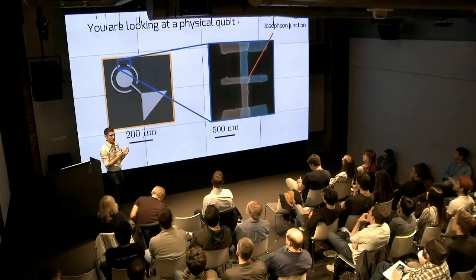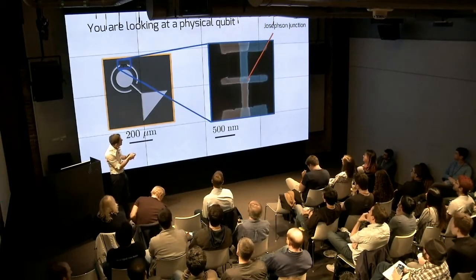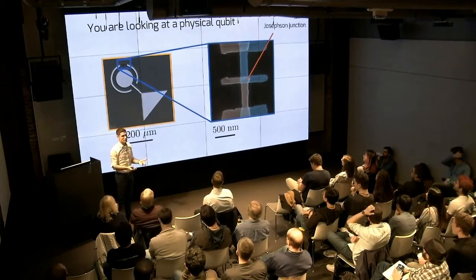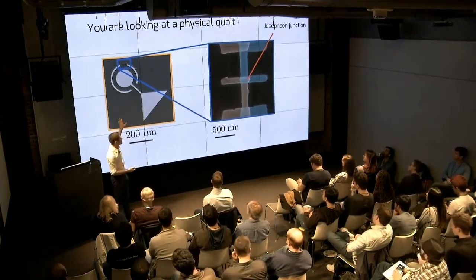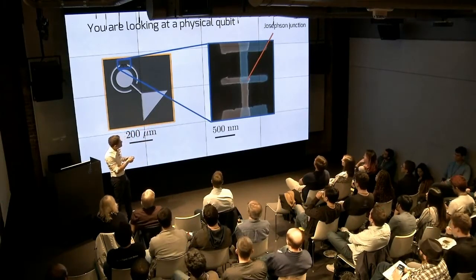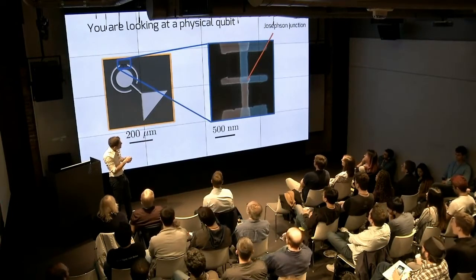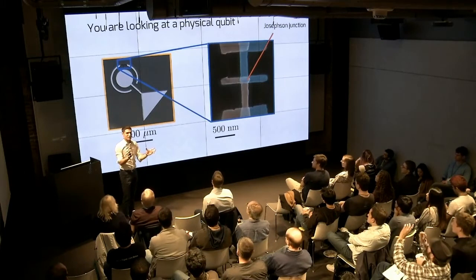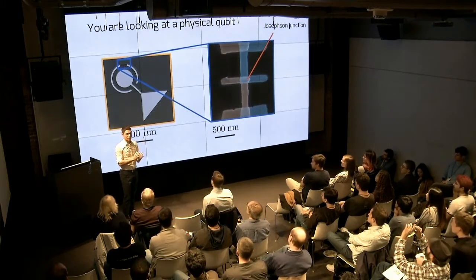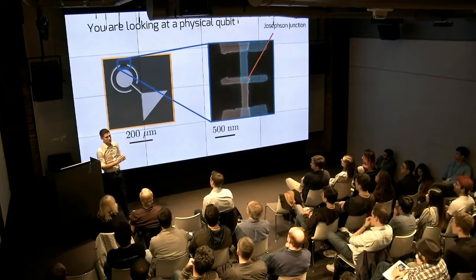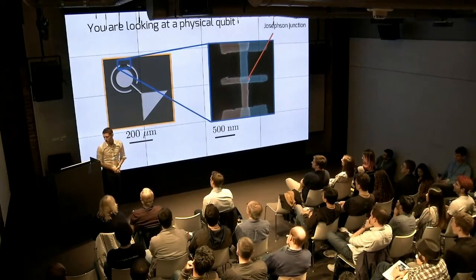If you want, you can also look at the junction itself — it's very small, just 200 nanometers by 200 nanometers. This is a SEM image, made with a scanning electron microscope, and you can clearly see the junction. One electron can jump from one side to the other. To be more accurate, it's actually not one electron but a pair of electrons called a Cooper pair, though for simplicity we'll treat it as a single electron jumping across.